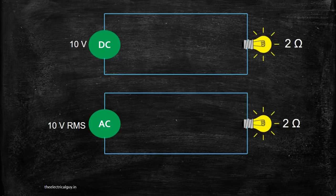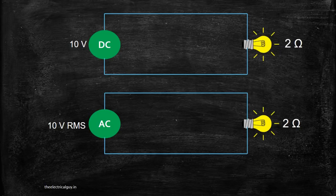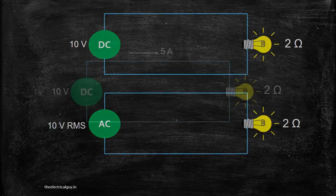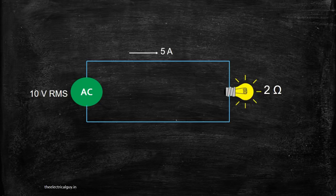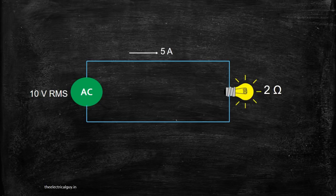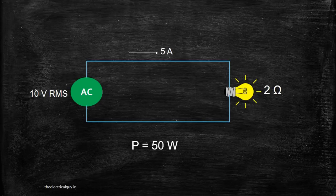Here we can see two different sources, one is of 10V RMS and other is of 10V DC. These sources are connected to the bulb who has resistance of 2 ohms. In case of DC circuit, power dissipated is 50W. But what about AC? As the 10V is RMS value, we can take it for the power calculation and power dissipated by the AC circuit will also be 50W. And that's why we need RMS value in case of AC circuits.